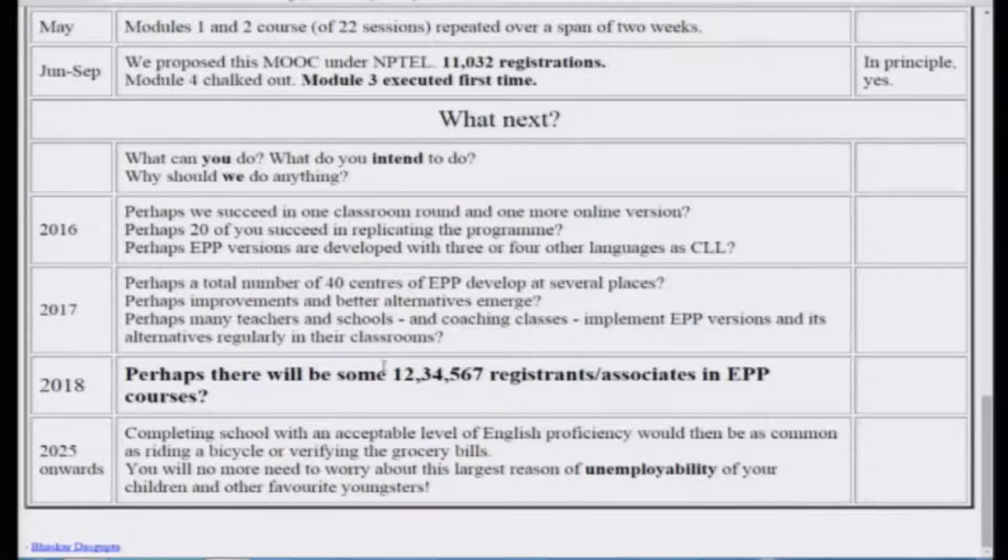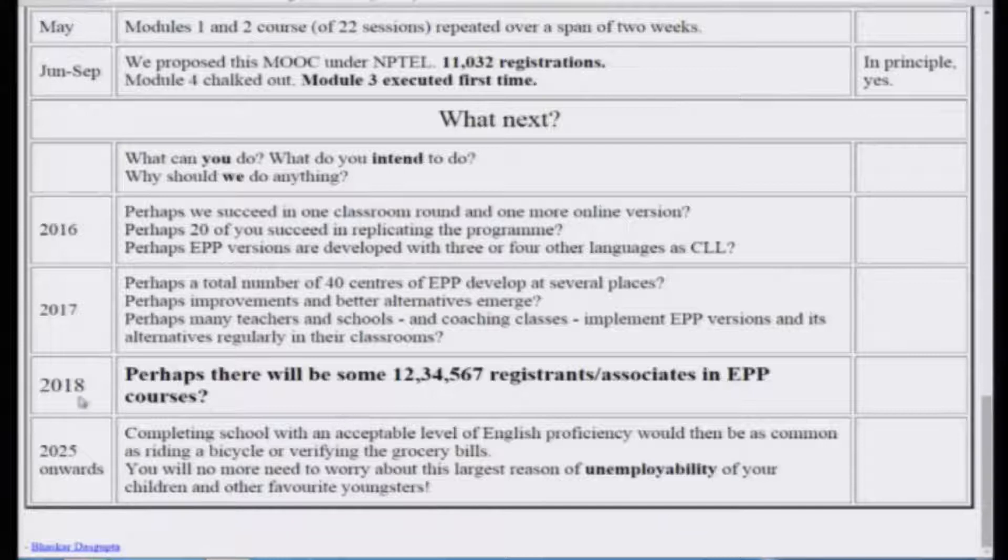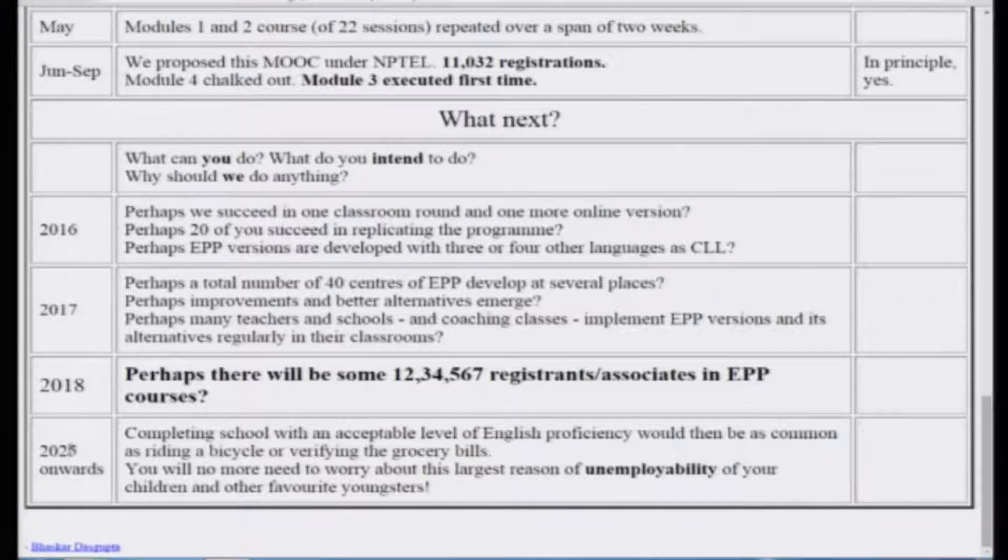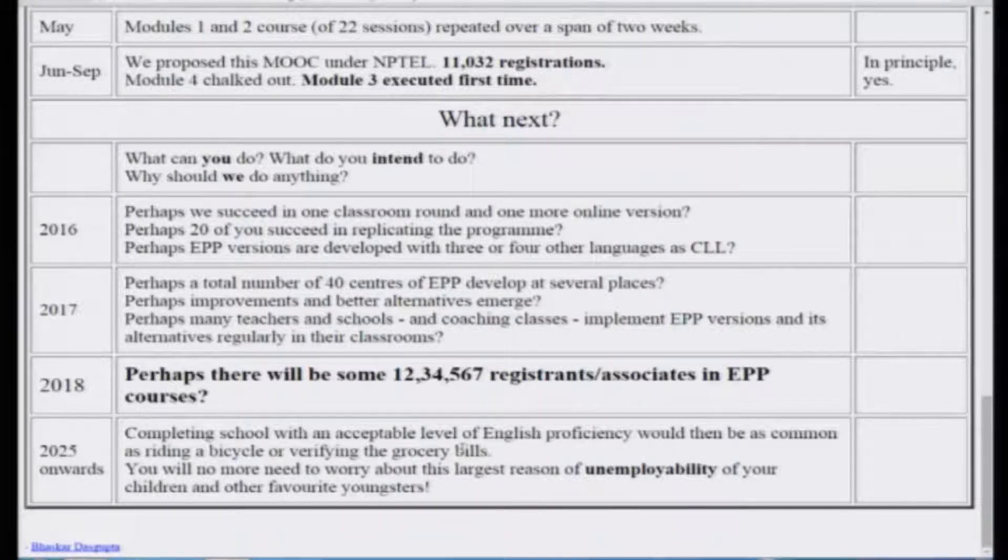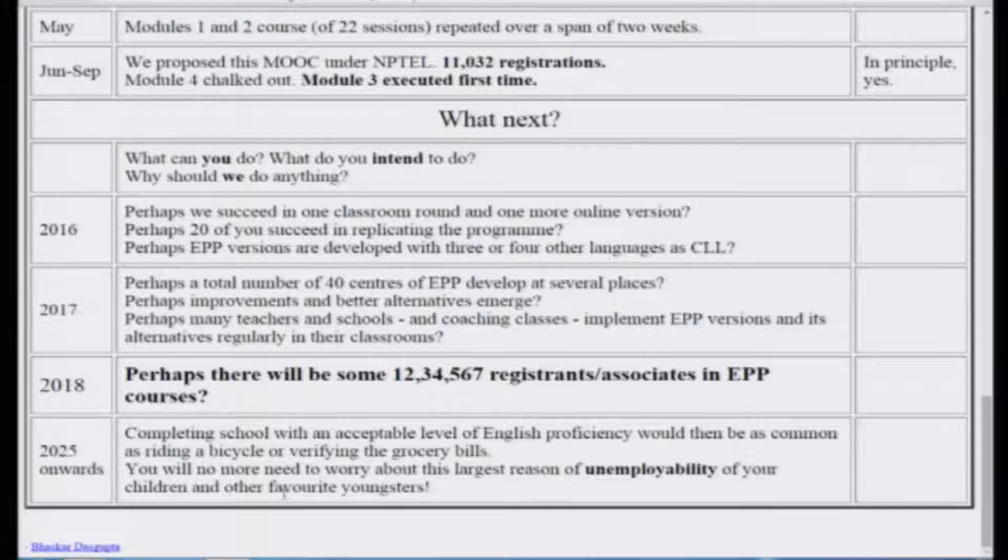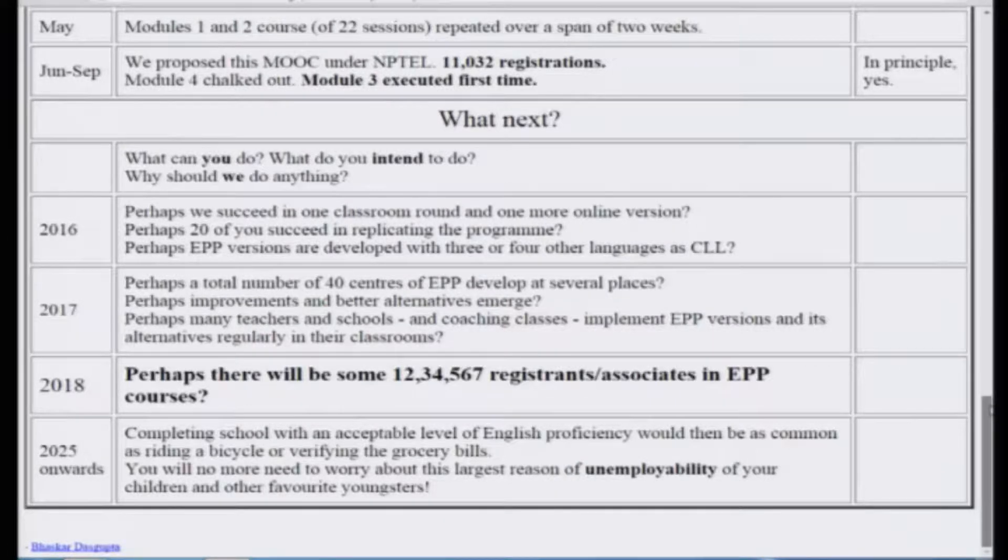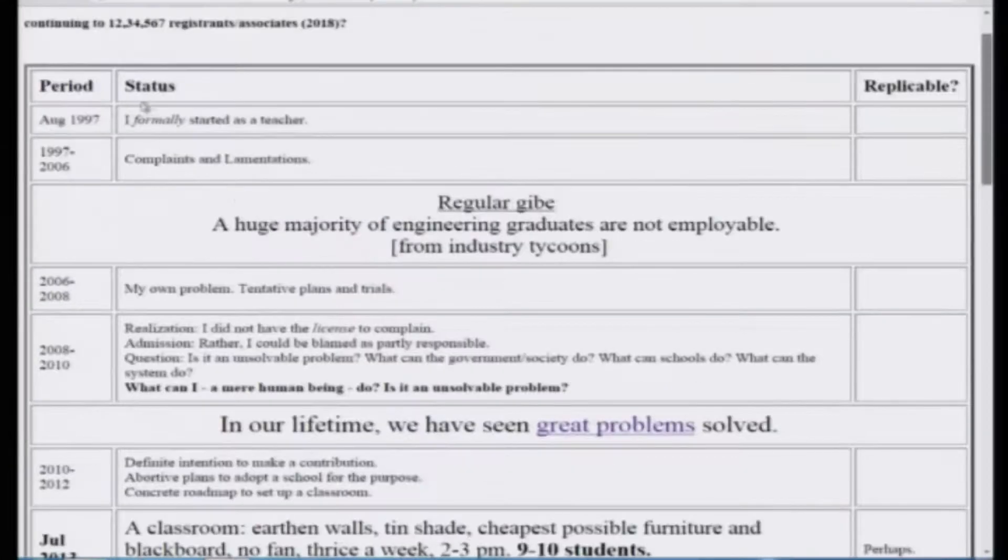Then what happens in 2018? Perhaps there will be 12,34,567 participants or associates in EPP courses. If that happens, I am not telling that it will happen, but it is not impossible. If this happens, then you and I will know that we have put in motion a system so that seven years later when these children come out of their school, 2025 onwards, completing school with an acceptable level of English proficiency would be common, just like riding a bicycle or verifying the grocery bills. So it will be that common, and then you and I will no more need to worry about this largest reason of professional unemployability of your children and other favorite youngsters in whose careers, in whose life you have an interest. I am continuing in quarter four with a lot of expectation that this idea, this theme will be taken up by others and continued forward.